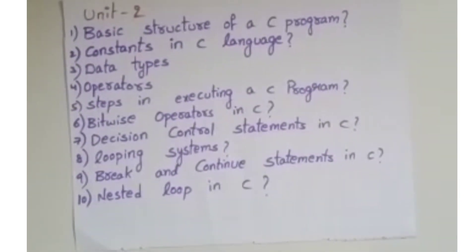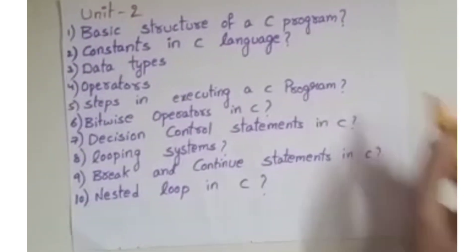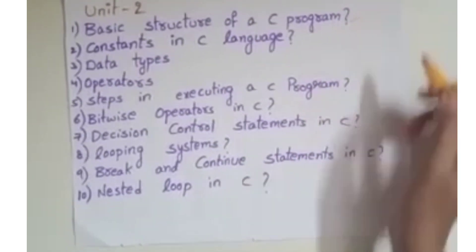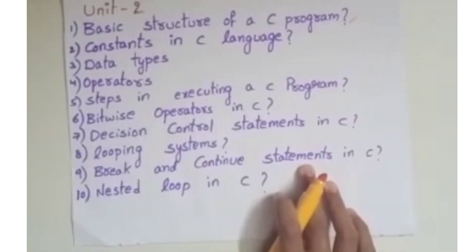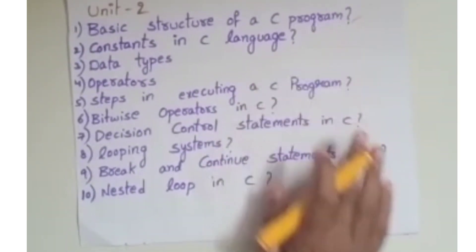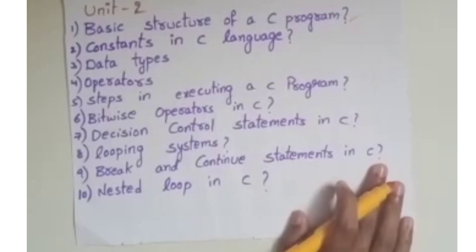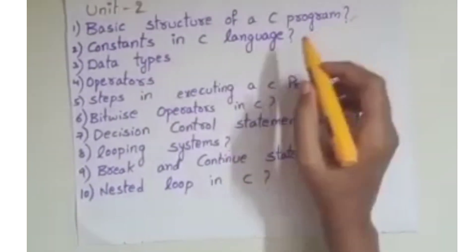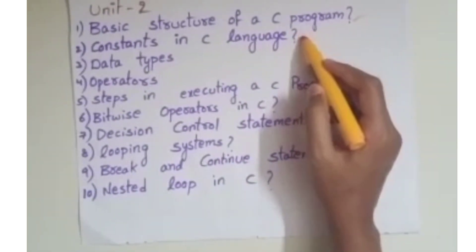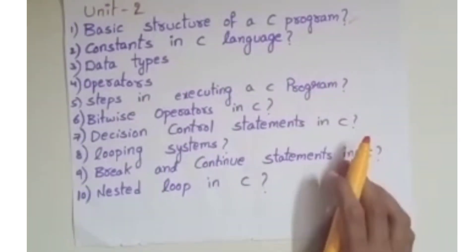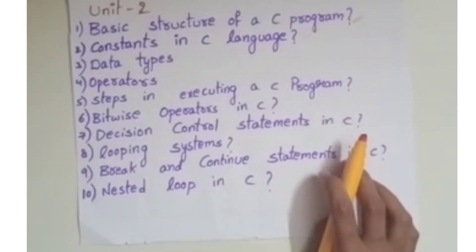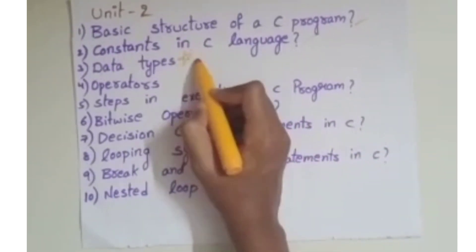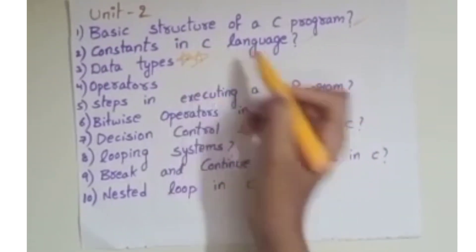Unit 2: Basic Structure of a C Program. Constants in C Language. Next question: Data Types — very, very important question.